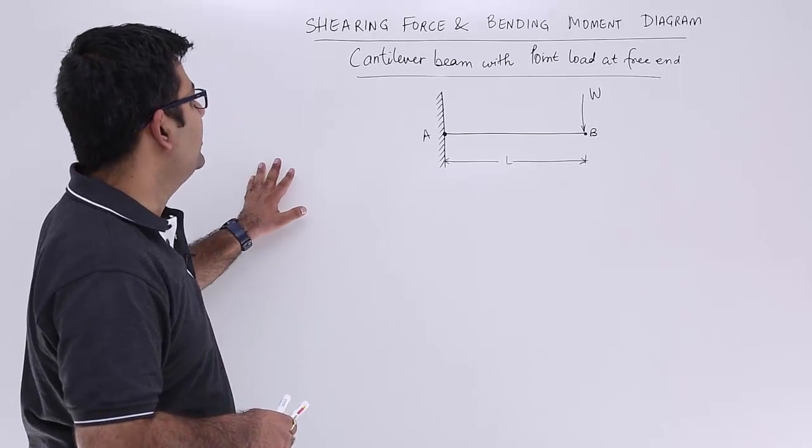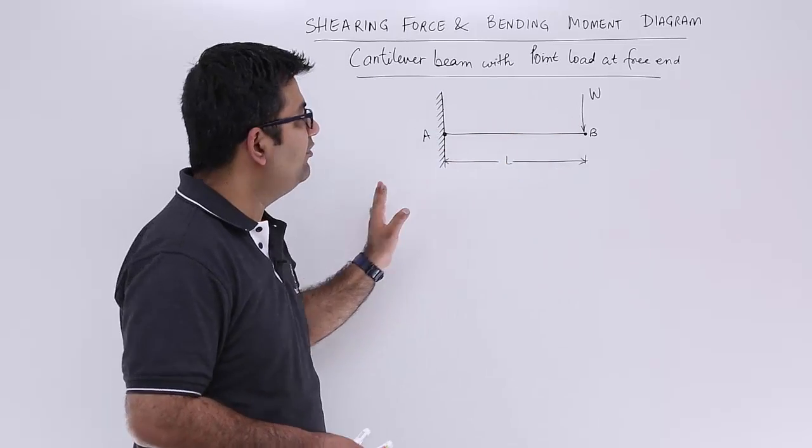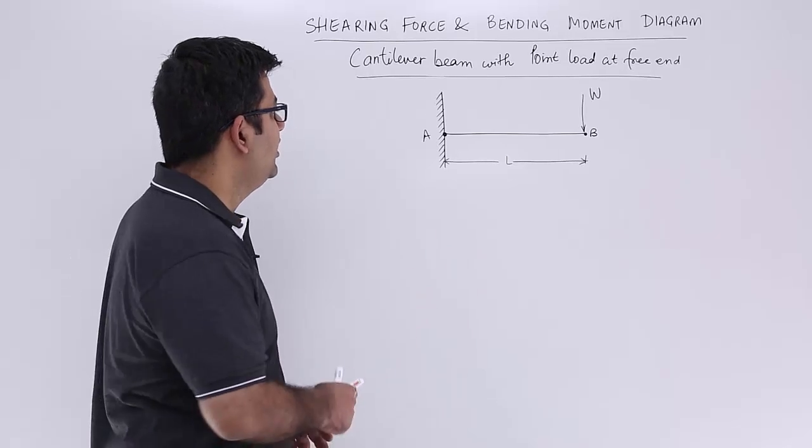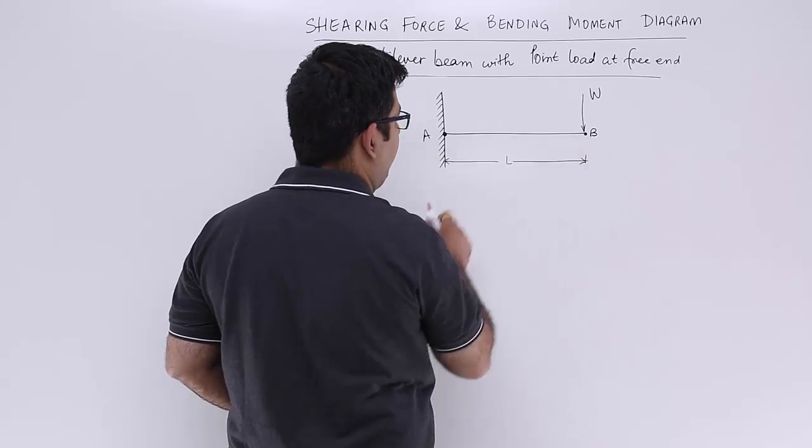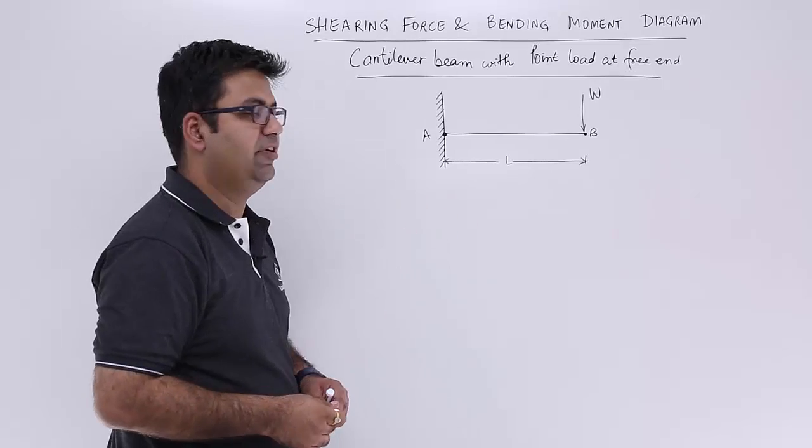Now let us look at the very first case which is a cantilever beam with a point load at the free end. So this is how a cantilever beam looks like with one end fixed and the other end free. So how do you analyze such a thing? It's very easy.